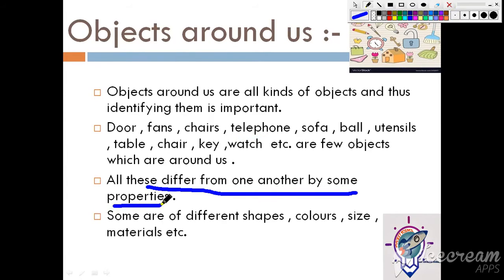This means that the materials which objects are made of differ. It is not necessary that one material is used in all objects. Objects are very different, so we can make them from a lot of different materials. Some are of different shapes, colors, size and materials.